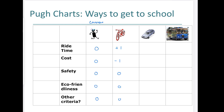The next option is riding in a car. That would definitely be an improvement for ride time. Cost would definitely be more. It's probably safer to be in a car. Eco-friendliness is not as eco-friendly. We're not going to worry about other criteria.